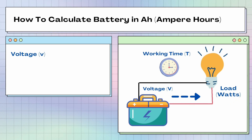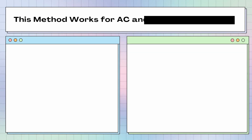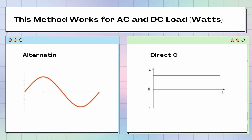Before we calculate the battery capacity, I need to tell you something. We will need three values to support our calculation. The first one is the voltage. The second one is load and wattage. And the third one is the working time in hours. Throughout this video, we will calculate the battery capacity in ampere hours. This method works for both alternating current or AC, and also direct current or DC.